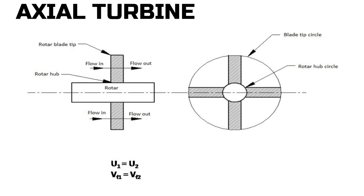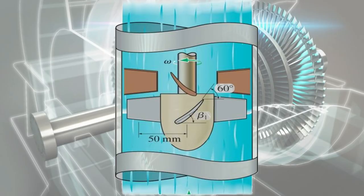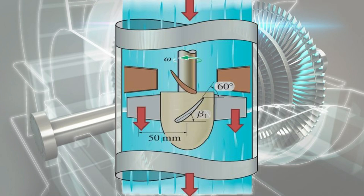An axial flow turbine is a turbine in which the direction of flow of fluid is axial or parallel to the axis of the shaft. It is a turbine that uses the energy of the propellant flowing parallel to the turbine axis.